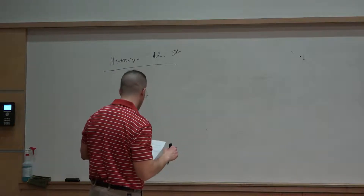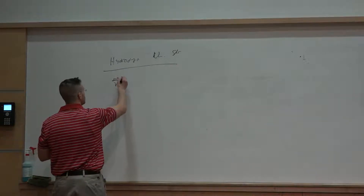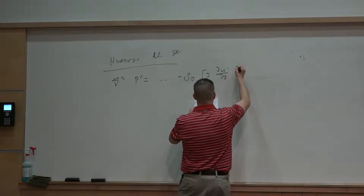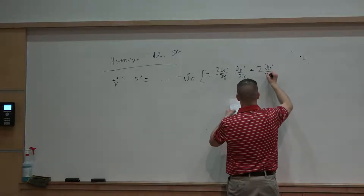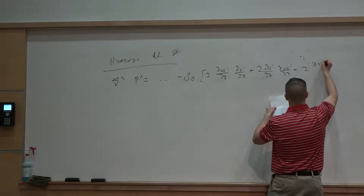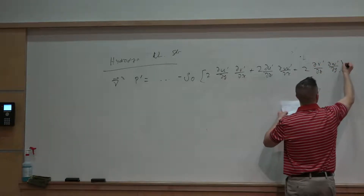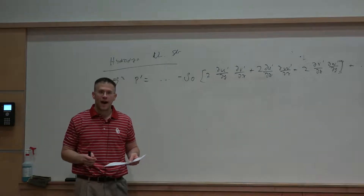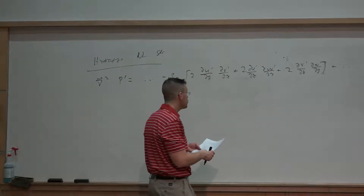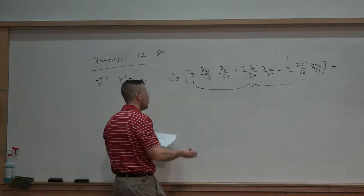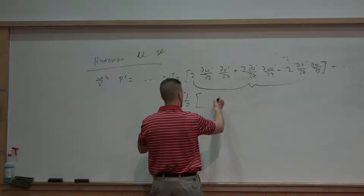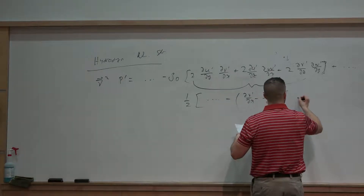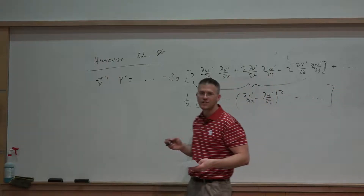We're going to isolate that term on the right-hand side of the equation to show that del squared p prime equals the other terms minus rho naught times two times (∂u'/∂y)(∂v'/∂x) plus two times (∂u'/∂z)(∂w'/∂x) plus two times (∂v'/∂z)(∂w'/∂y), plus dot dot dot. There is an extra credit problem on the exam where you will show that this particular term can be expressed as one-half times a bunch of terms minus (∂v'/∂x minus ∂u'/∂y) squared minus other terms.